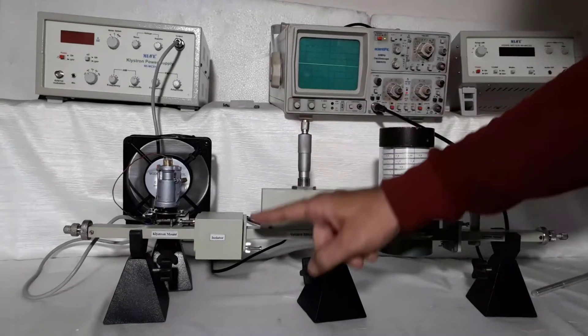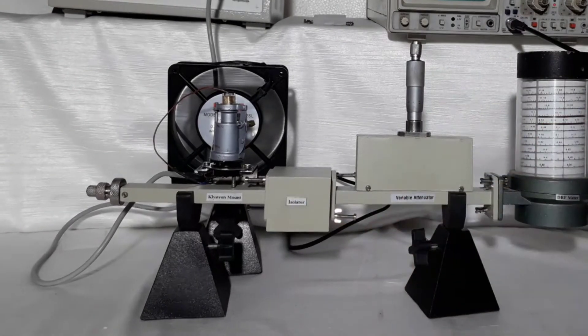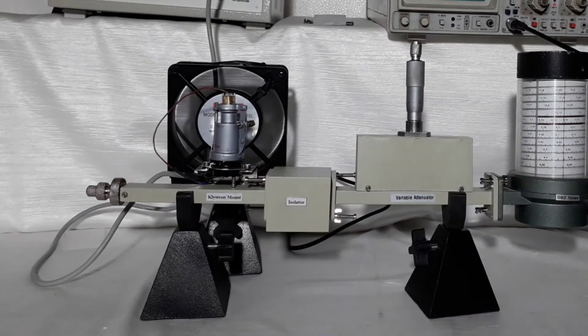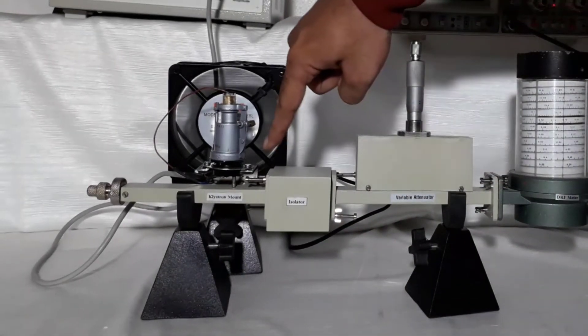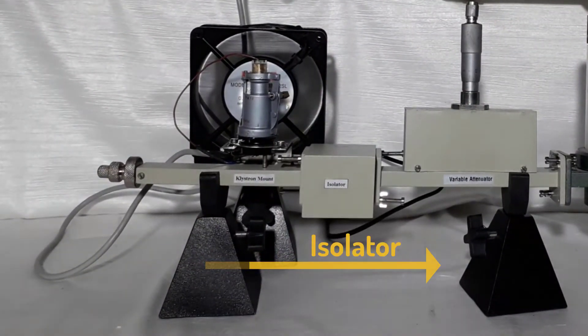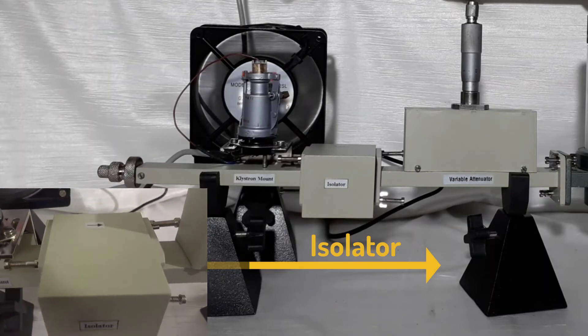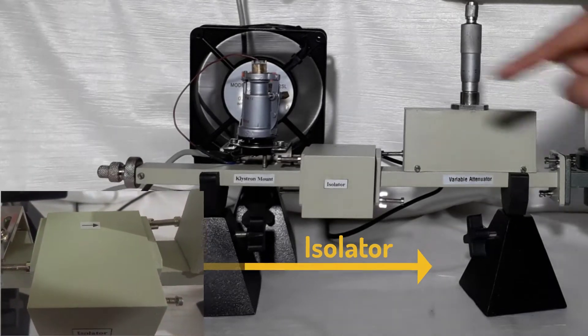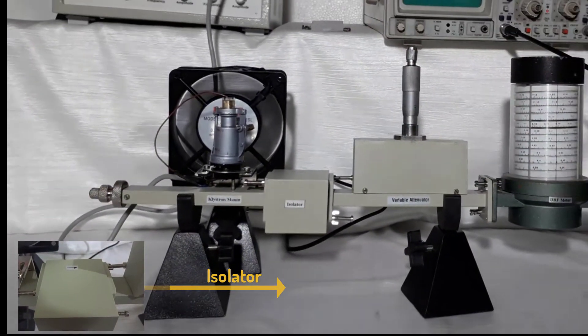A klystron mount, an isolator is connected in test bench. Function of isolator is to pass all microwave signal into one direction only. Arrow sign on isolator indicates the direction in which microwave signal travels.